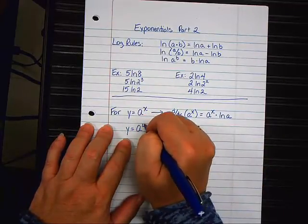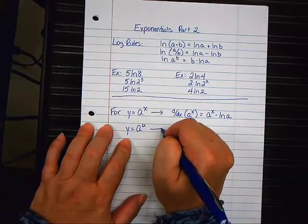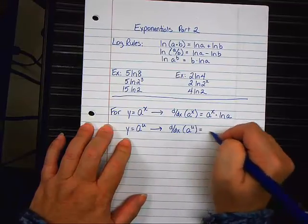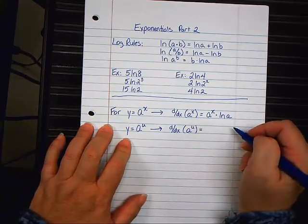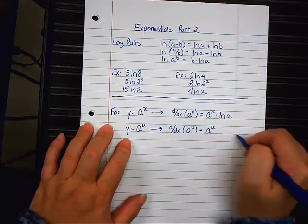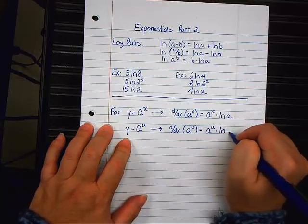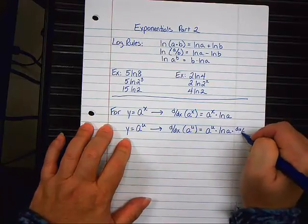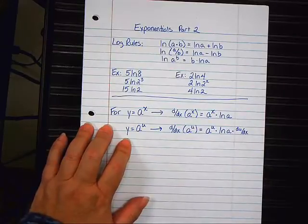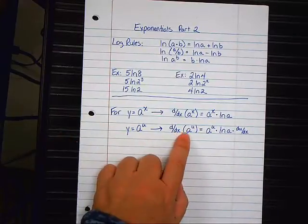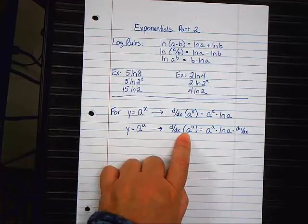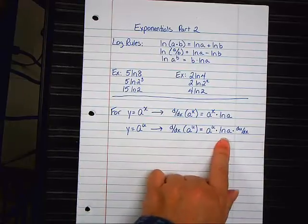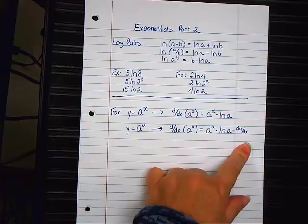Now, if it's a to some other power like u. The derivative of a to the u. Once again, if the power is something more than just an x, you copy-paste a to the u. You still do the natural log of a. But then you multiply, like we did yesterday, by the derivative of the exponent, which is du dx. So, when you have a base other than e to a power other than x, it's going to have three steps. You've got to copy-paste, the natural log of the base, and then the derivative of the power. Three different things.